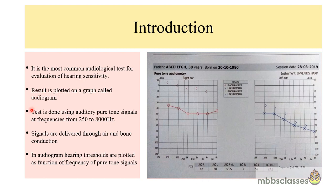This test is done using pure tone signals at frequencies ranging from 250 Hz to 8000 Hz. In the audiogram, the Y-axis is the hearing level or hearing threshold measured in decibel HL, and the X-axis plots the different frequencies of the pure tones given to the particular ear: 250, 500, 1k, 2000 Hz, 4000 Hz, and 8000 Hz.